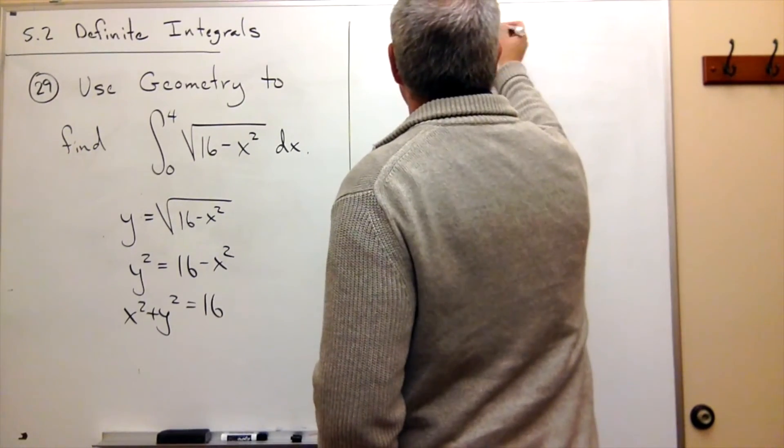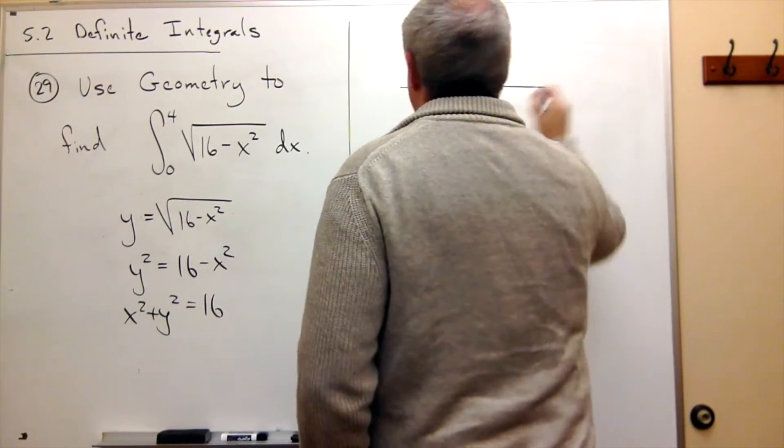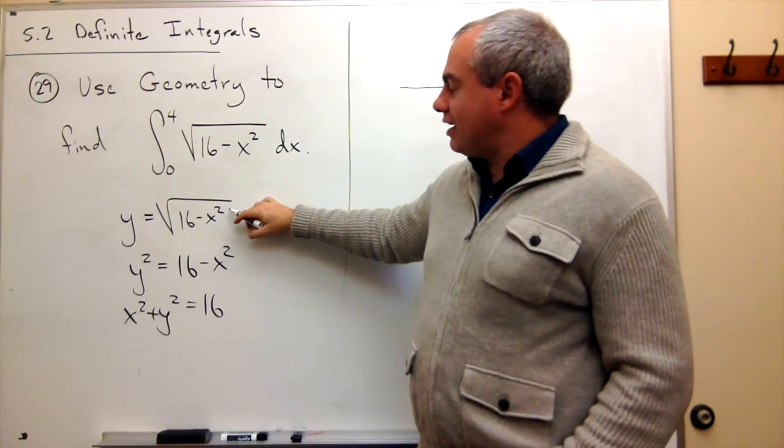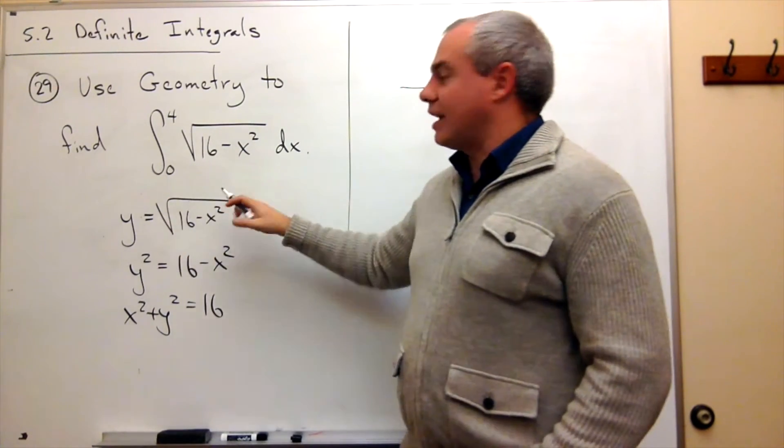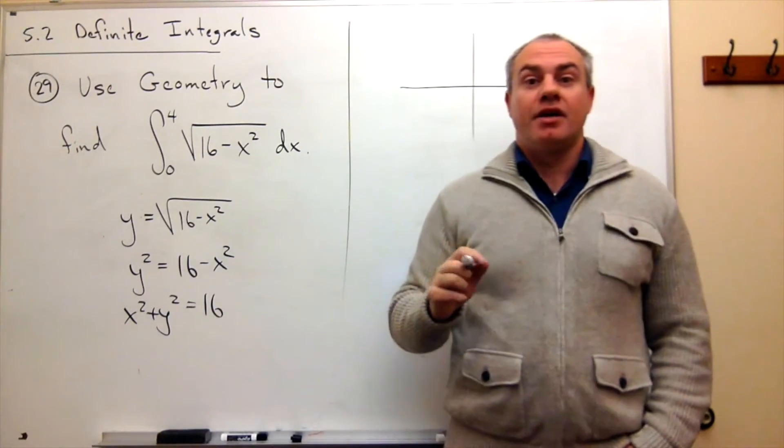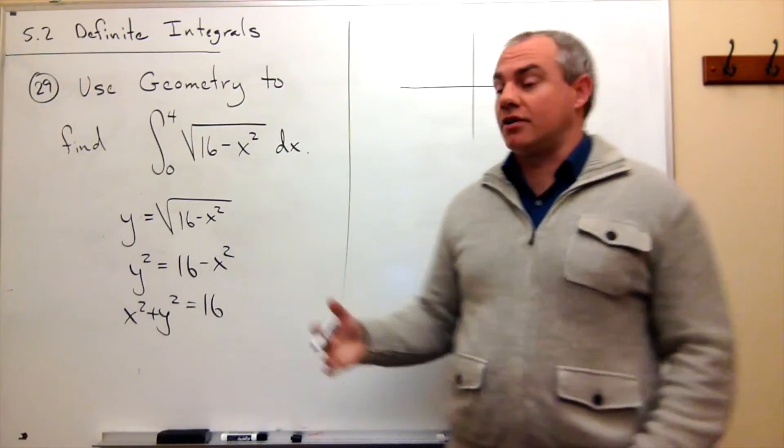So up here, let's draw our graph. We have a circle of radius 4, but it's not all of the circle, because I took a square root here, and it's the positive square root, so it's just the top half of the circle.